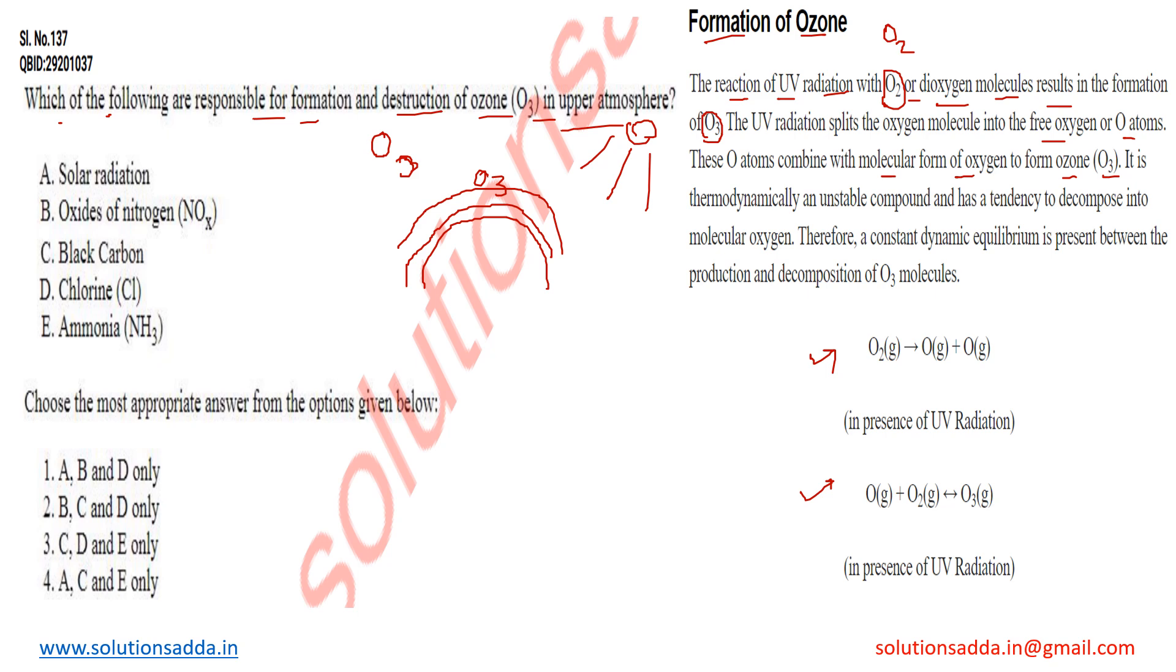So first, option A is correct that solar radiation is used for the formation of O3. So the option in which A is contained we can take, otherwise eliminate the rest of the options. So option number B and C we can directly eliminate because solar radiation is not there.